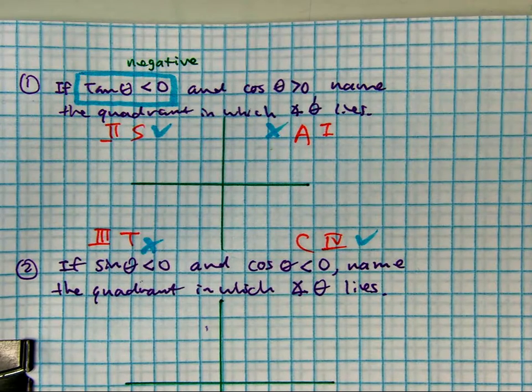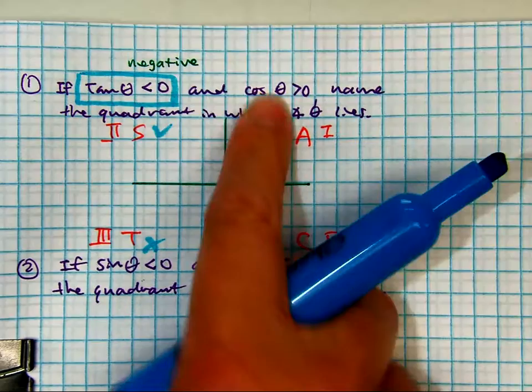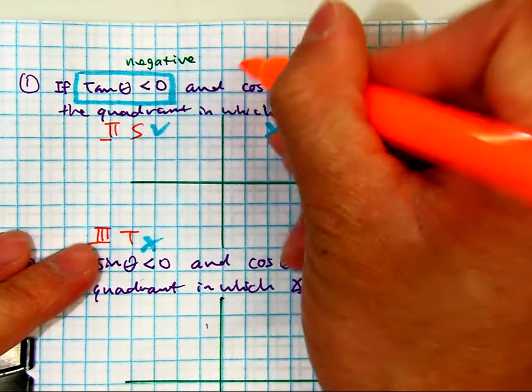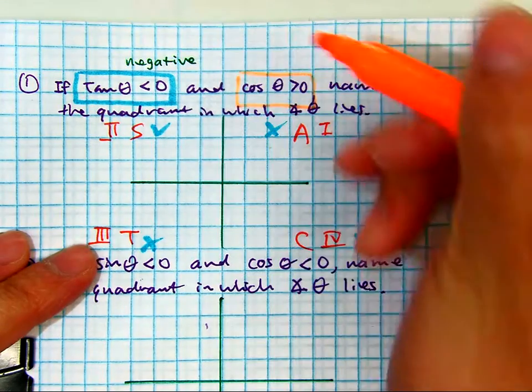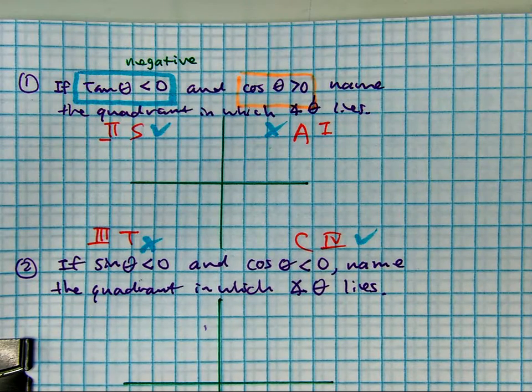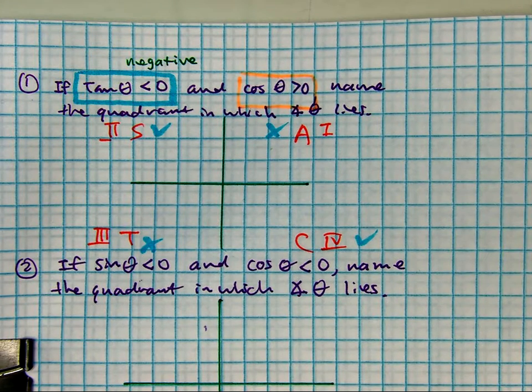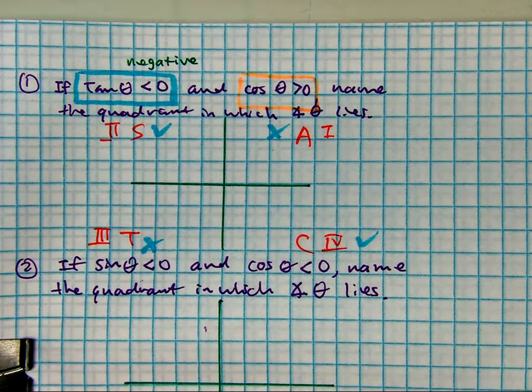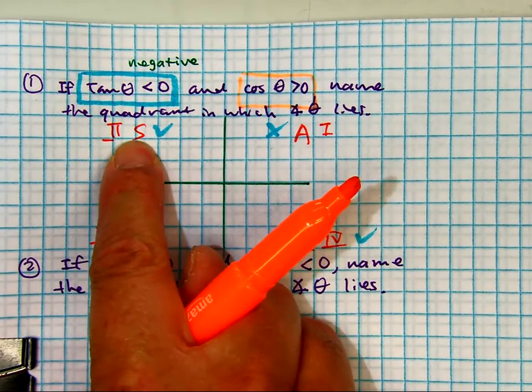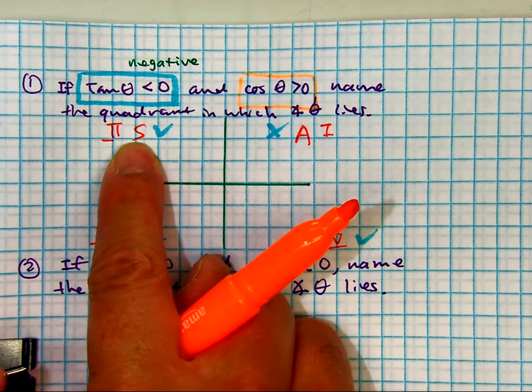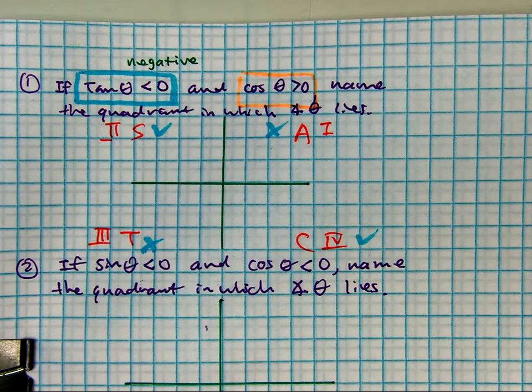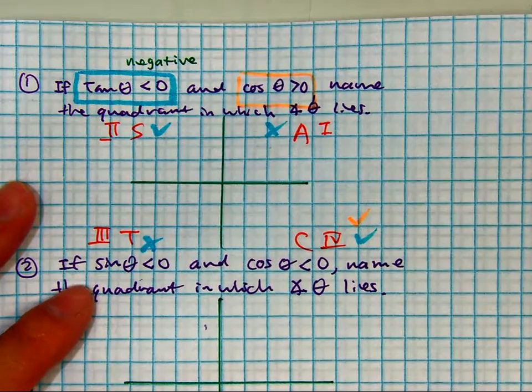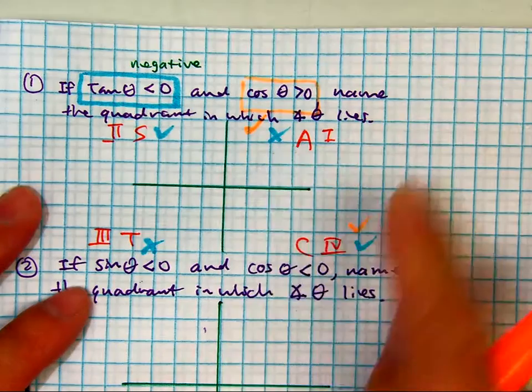Thank you, Tatiana. Delia, what does cosine greater than zero mean? It's positive. Where is cosine positive? Remember, we're looking for positive. Quadrant four and? Quadrant one, because they're all positive and just cosine.